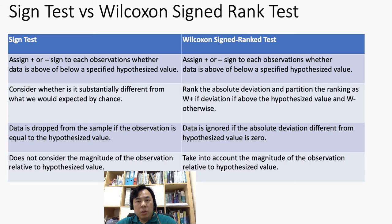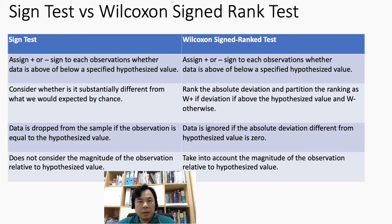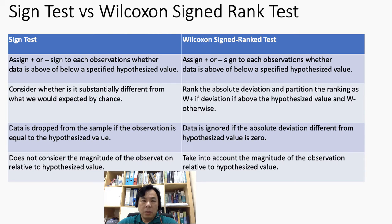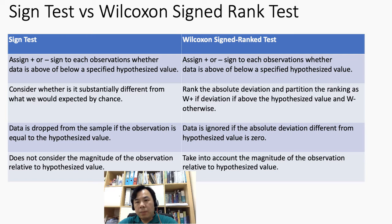For the Wilcoxon signed rank test, instead of just having plus or minus signs, we also perform a ranking procedure by evaluating the absolute deviations. After assigning the signs, we evaluate the absolute deviations and use them to perform ranking on the data observations. From there, we partition the rankings based on data observations above the hypothesized value — denoted W positive — and those below, denoted W negative.